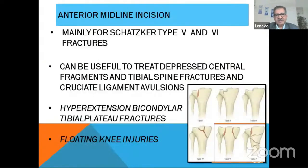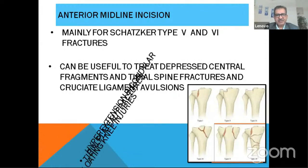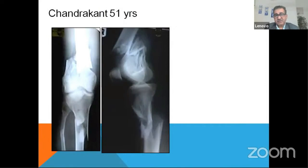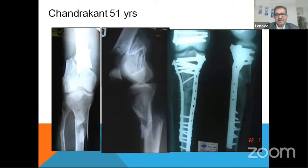We have discussed several indications. Now for hyperextension injuries and floating knee injuries: in a floating knee injury, the patient must be operated urgently. We started with the femur, completed it within one to two hours, then extended the approach — the anterior midline approach was taken.